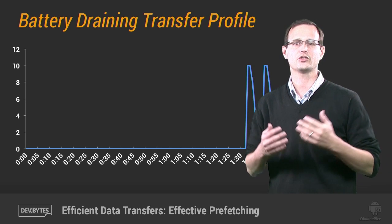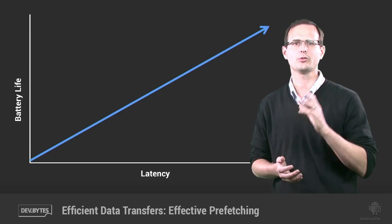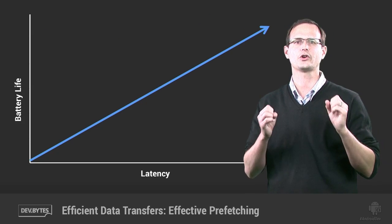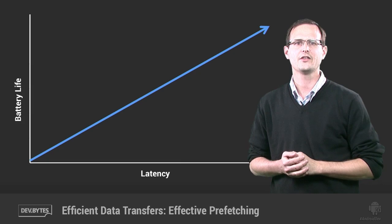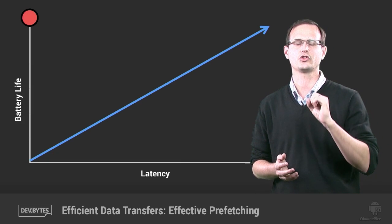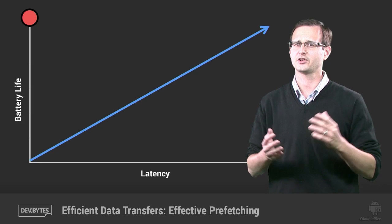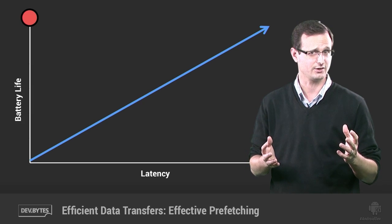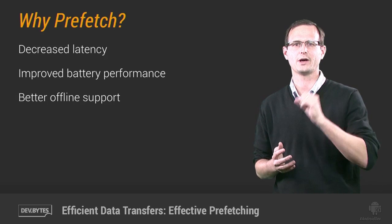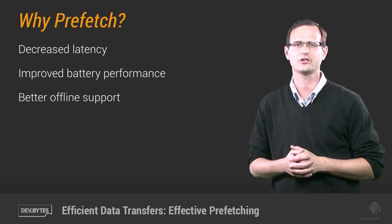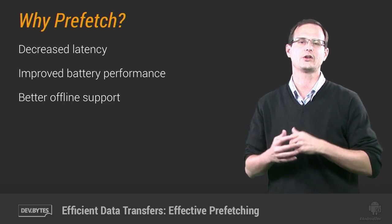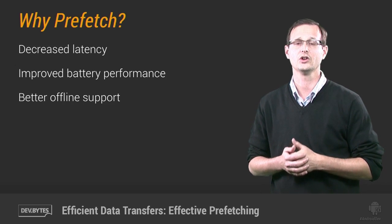We know that carriers adjust the timings of the cell radio state machine to compromise between data transfer latency and battery drain, but within our app we want to create the perfect user experience that sits at the sweet spot of non-existent latency and virtually no battery impact. Is such a thing even possible? Yes, it is. Prefetching offers the best of both worlds: an effective way to reduce battery drain by reducing the number of data transfers and minimizing the in-app latency triggered when users have to wait for downloads to complete before performing an action or viewing data.